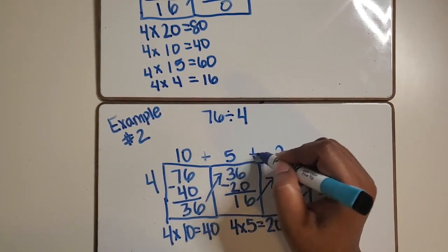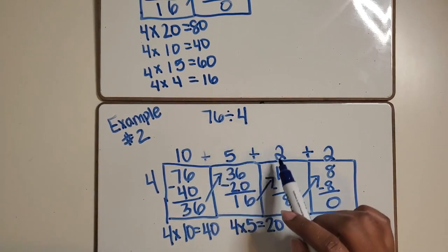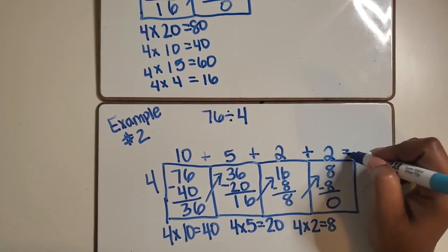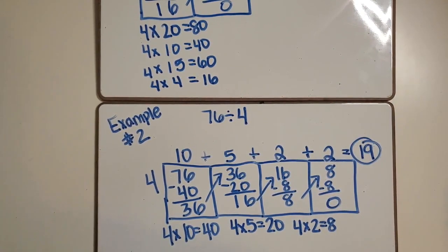Now we have our partial quotients and we need to add them back together. 10 plus 5 equals 15 plus 2 equals 17 plus 2 more equals 19. Again 19 water bottles will go to each of the 4 fourth grade classes.